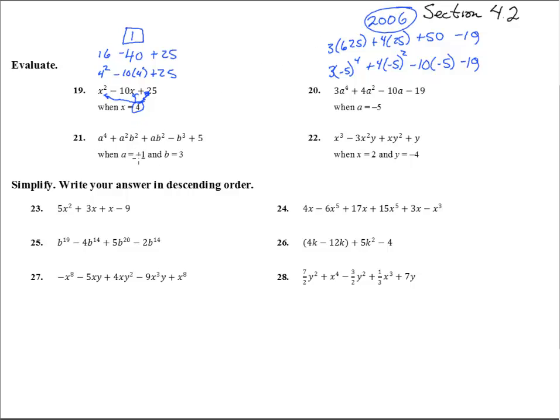Number 21. It says that a is negative 1 and b is 3. So we stick in negative 1 to the 4th plus negative 1 squared times 3 squared, that's where b goes in, plus negative 1 times 3 minus 3 cubed plus 5. Negative 1 to the 4th, that's 1.